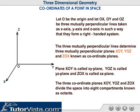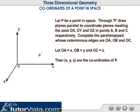The three coordinate planes XOY, YOZ and ZOX divide the space into eight compartments known as octants. Let P be a point in space.